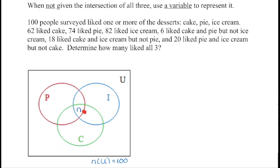Working out from the middle: 62 people like cake, so I'll put a little 62 by the cake circle. 74 people like pie — a little 74 by pie. And 82 people like ice cream — a little 82 there. Then we're told 6 people like cake and pie but not ice cream, so we can fill 6 in directly. 18 people like cake and ice cream but not pie, so 18 goes in that section. And 20 people like pie and ice cream but not cake, so those 20 go in there.